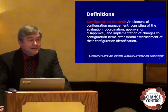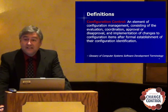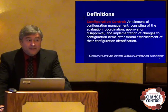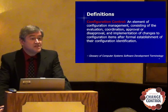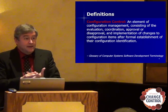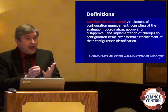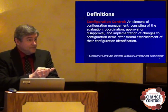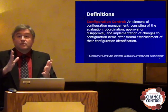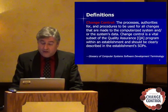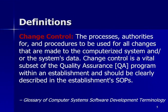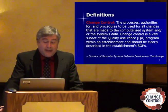For instance, you might have change control on four different configuration items, but they're all part of a larger configuration — and that becomes configuration control. For instance, you might have a system that consists of hardware, software, user manuals, procedures, and training for the users of the system. A configuration of that system might be called revision six, but under that there are many different configuration items all under individual configuration control. So let's look at the definition of configuration control: the processes, authorities for, and procedures to be used for all changes made to the computerized system and/or the system's data.